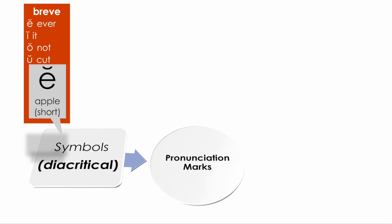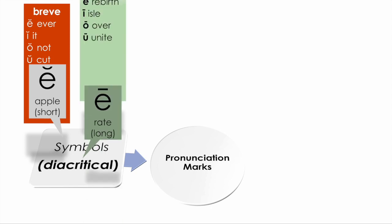As you see, the voice moves very quickly over this vowel. The other symbol is the macron — a straight line — which indicates a long sound, like in the words 'rebirth,' 'aisle,' 'over,' and 'until.'